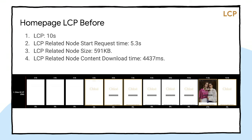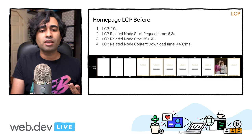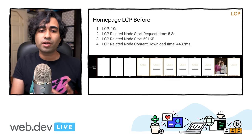Chloe started off with an LCP of about 10 or 11 seconds. Their primary hero image content wasn't getting fetched and rendered until about 11 seconds into the trace. Their homepage suffered from heavy full-screen image downloads, poorly optimized images, and some images that were requested late in the network chain. These are very common issues, and it's useful to be aware of what impacts LCP.